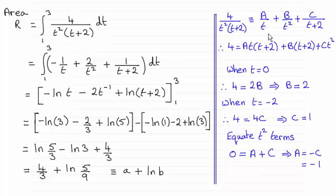We've got a repeated factor with t squared, so it's got to be a constant A over t plus another constant B over t squared. And then for the linear factor here, it's going to be another constant over that linear factor t plus 2.